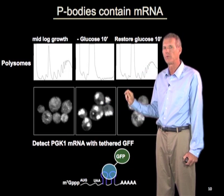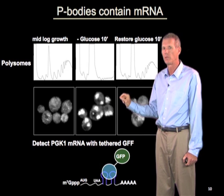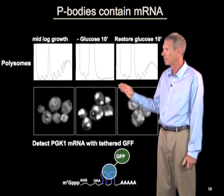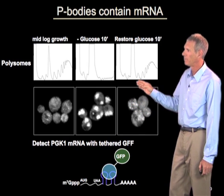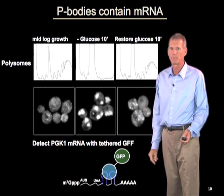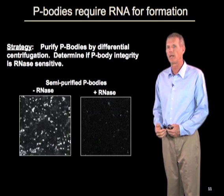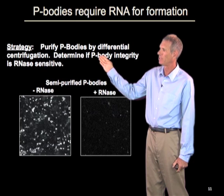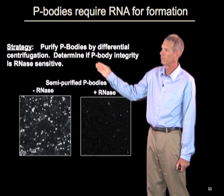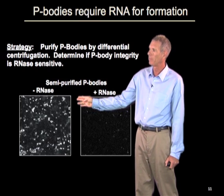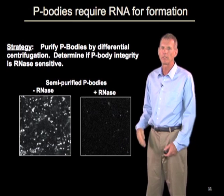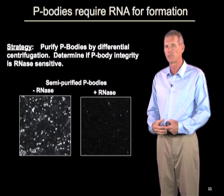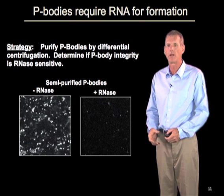Those RNAs can reversibly leave p-bodies and re-enter translation, as shown by Muriel Mengiz and Daniela Texierra in my lab. If you add glucose back, these p-bodies shrink down and the polysomes are restored. P-bodies not only contain RNA, but they also require RNA for their formation. In an experiment by Marco Valencia Antonio Sanchez, he purified p-bodies by differential cell centrifugation, and treating those p-bodies with RNase caused them to fall apart. So p-bodies are complexes that form on non-translating mRNAs, contain a discrete set of proteins, and require that RNA for their formation.